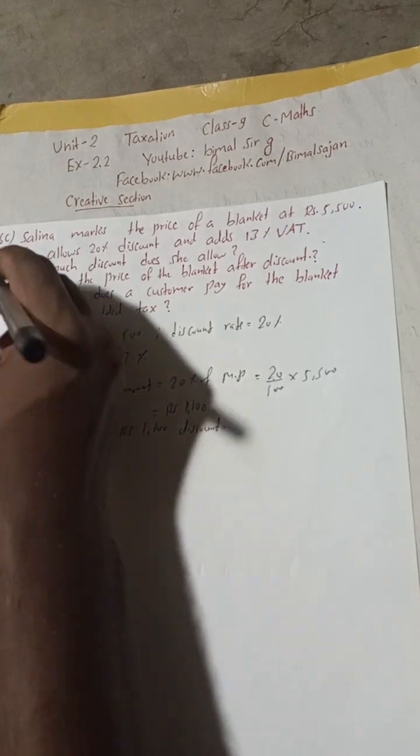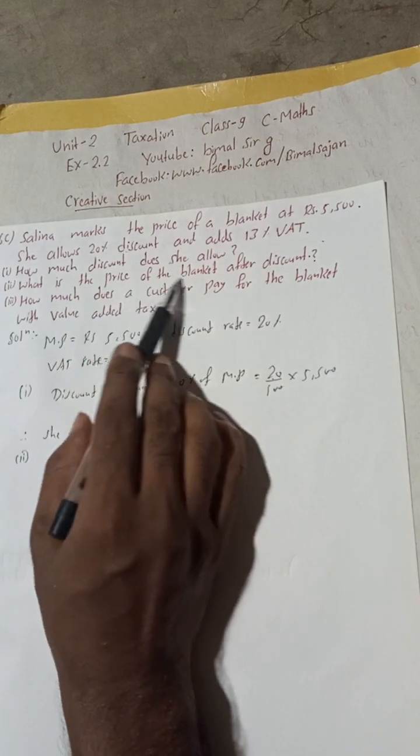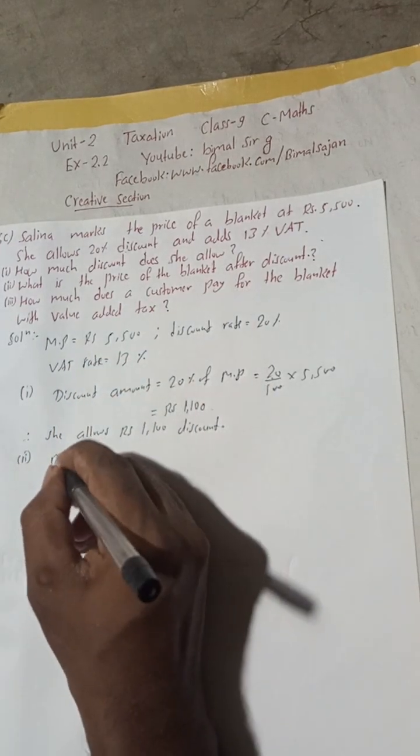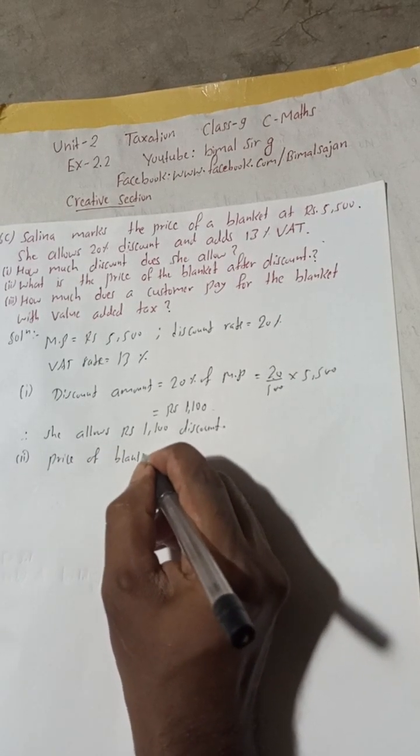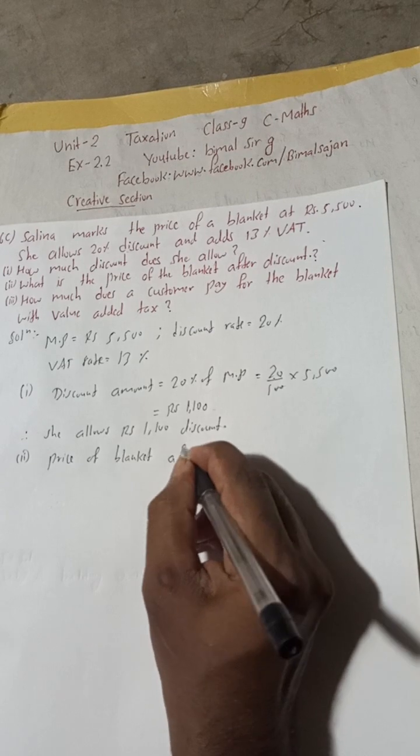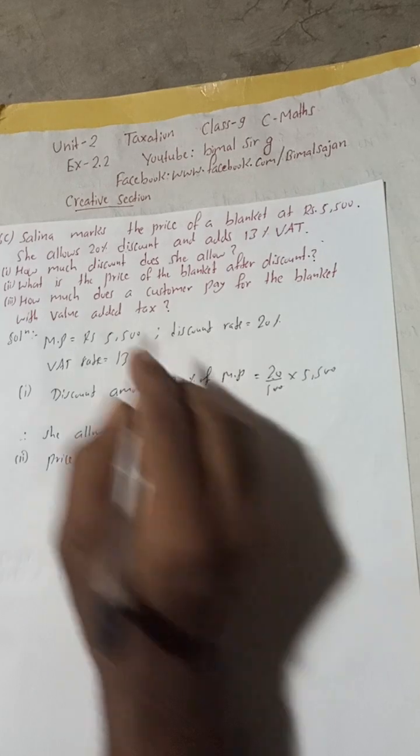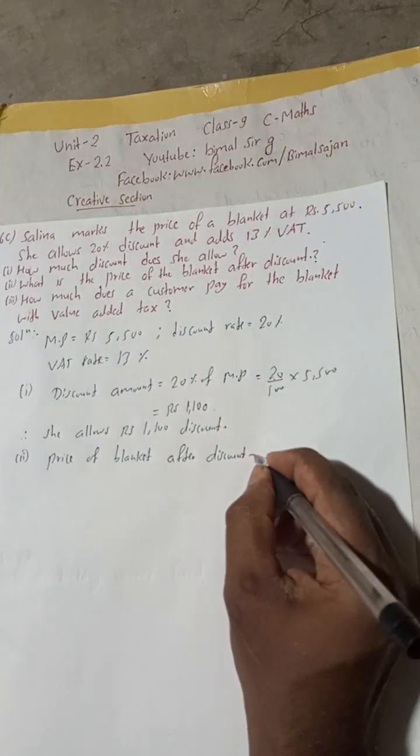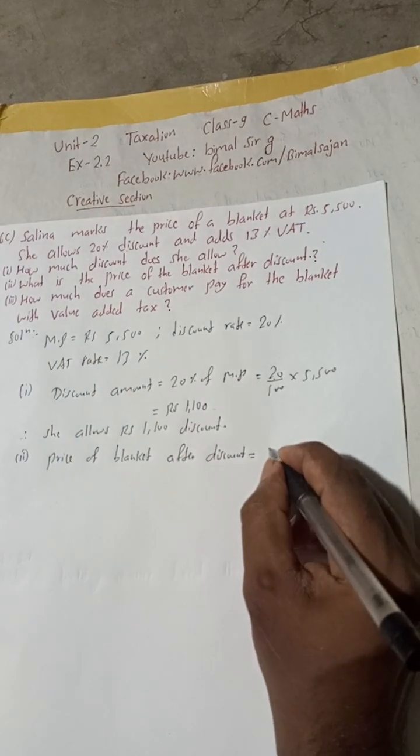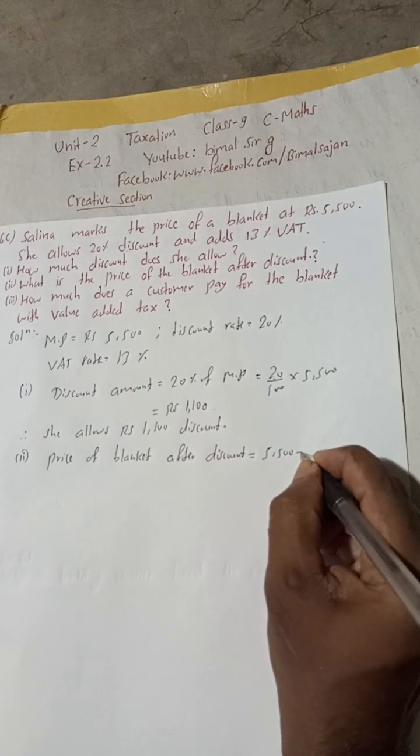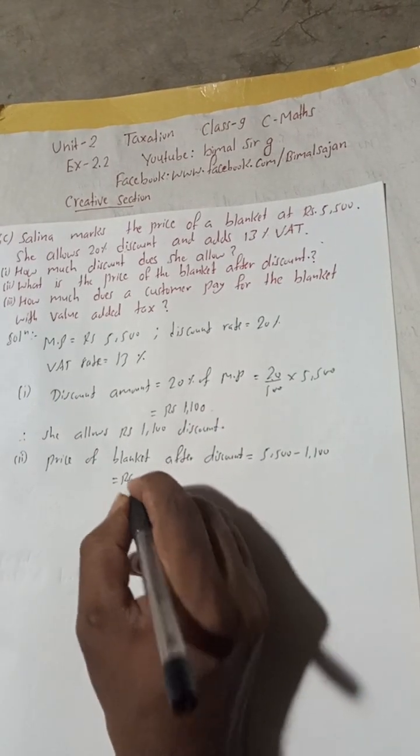Number two: What is the price of the blanket after discount? So you can write here, price of the blanket after discount. The price of blanket after discount is equal to now this marked price minus this discount amount. So marked price is 5500 minus this is 1100 discount. So this is equal to Rs 4400. This is 4400, the price of the blanket after discount. This is the second answer.